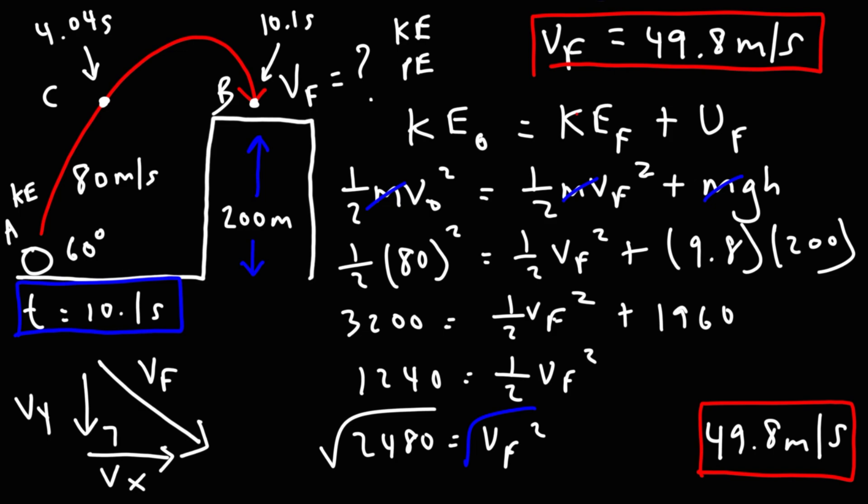As you can see, it was a lot faster to get the answer using the conservation of energy approach. So I wanted to show you this example so you have other ways of solving projectile motion problems. You're not just limited to using the kinematic equations. You could use conservation of energy to solve for things like the height or the final velocity, as we've done so in this problem.